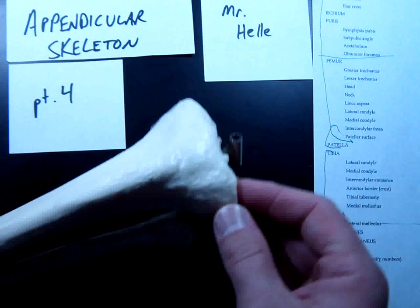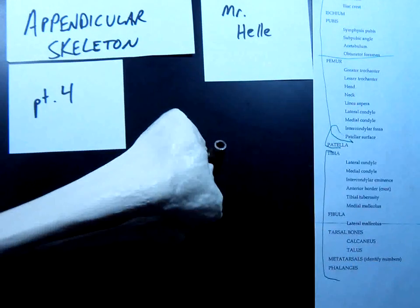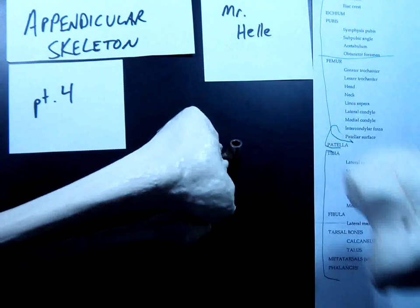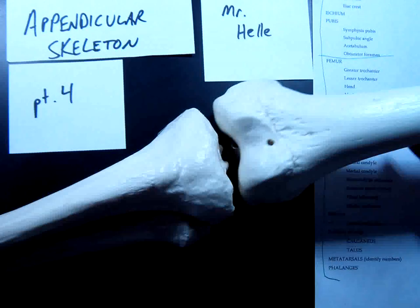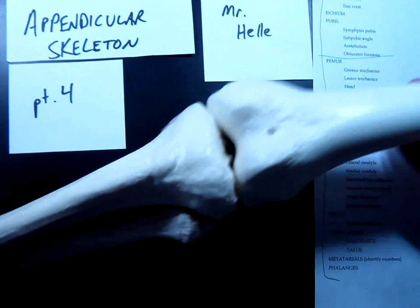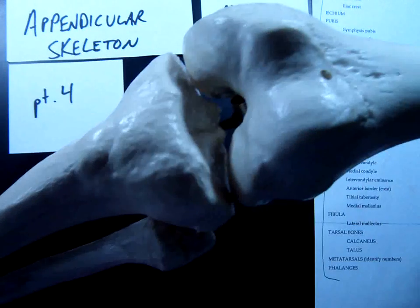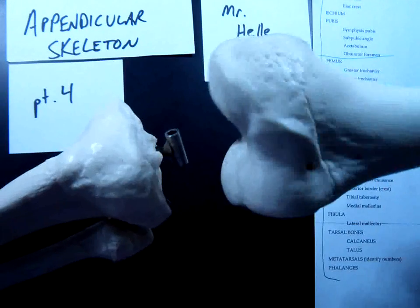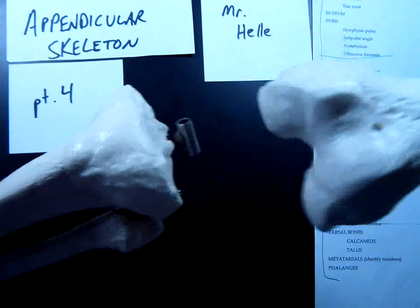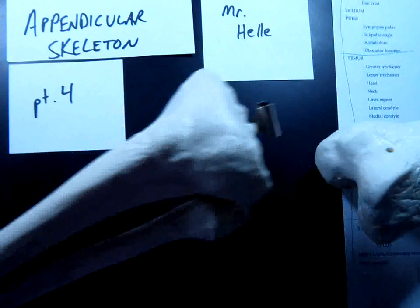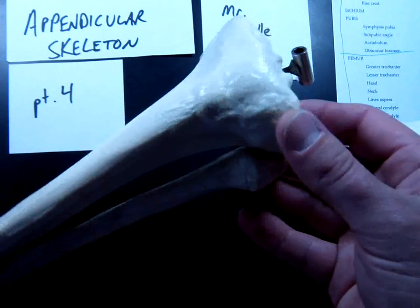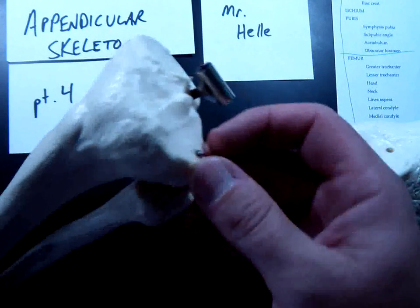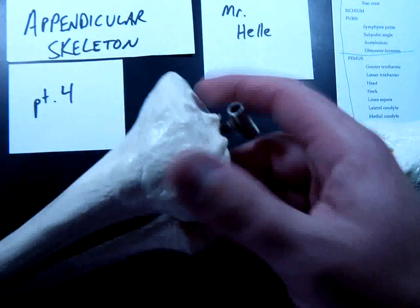This tibia is the one that makes the knee joint as well. So it connects up with the femur right here and those condyles connect. There's condyles we discussed in the last video on the femur, the lateral and medial, but there's also lateral and medial condyles on the tibia. They are these indentions here and here.